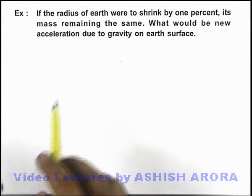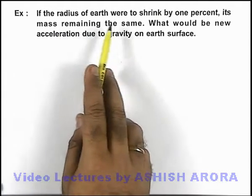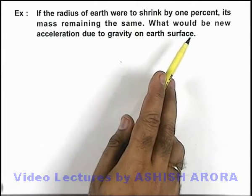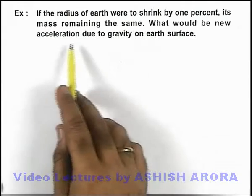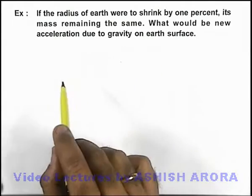In this example, if the radius of Earth were to shrink by 1%, its mass remaining the same, we are required to find the new value of acceleration due to gravity on Earth's surface.